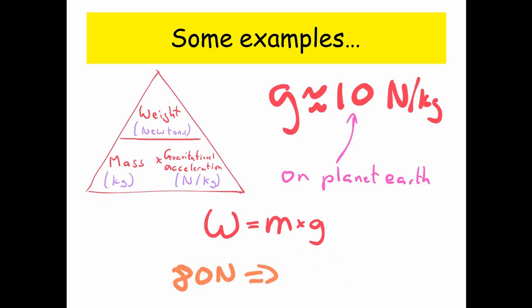So what about 80 newtons? Well, again, weight at the top, gravitational acceleration at the bottom, so 80 divided by 10, that should be 8 kilograms.